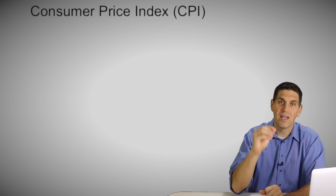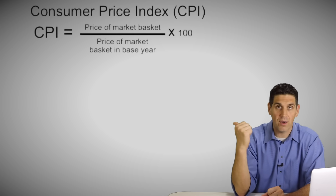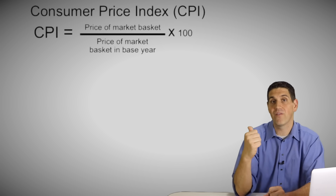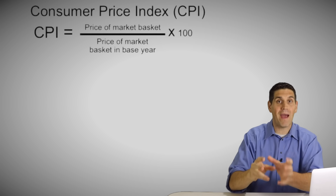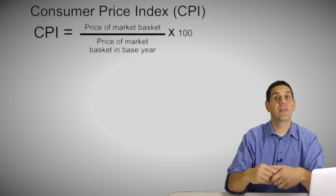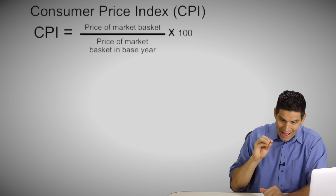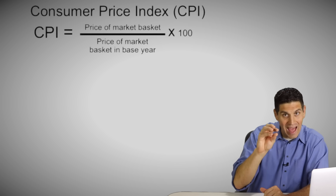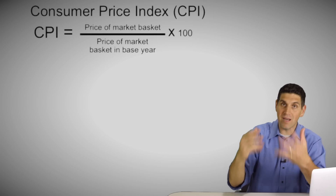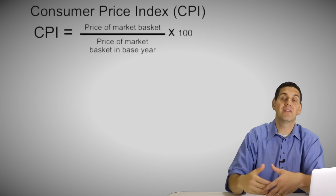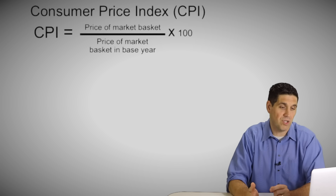Once you practice it, it's going to make sense. First, you have to understand and know the equation for CPI: it's the price of the market basket in the year you're looking for, divided by the value of that market basket back in the base year, times 100. That number is the CPI — an index number that tells you how prices changed relative to the base year.